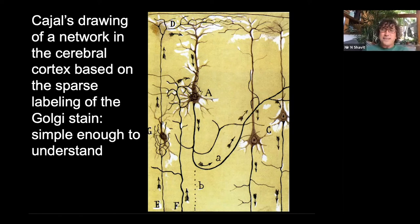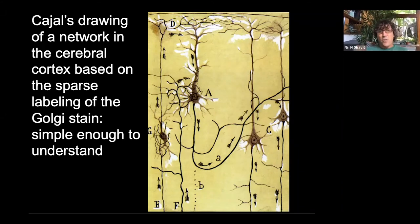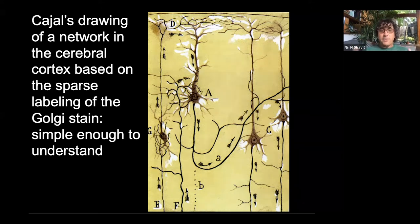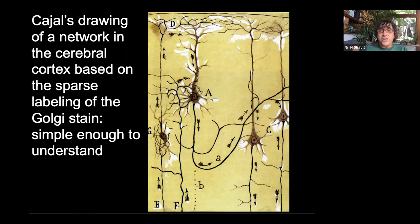Golgi spent the whole Nobel Prize lecture explaining why Cajal was wrong and that it was one big cell. What happened is we had to wait until the 1950s, when people actually looked at these neurons with electron microscopes to understand that Cajal was right. Why am I showing you this? Because these images are sparse reconstructions. In this image you can see four neurons, but really in a slice of the brain of that size there would be an enormous number of neurons. So how do we get at the dense reconstruction of the brain?